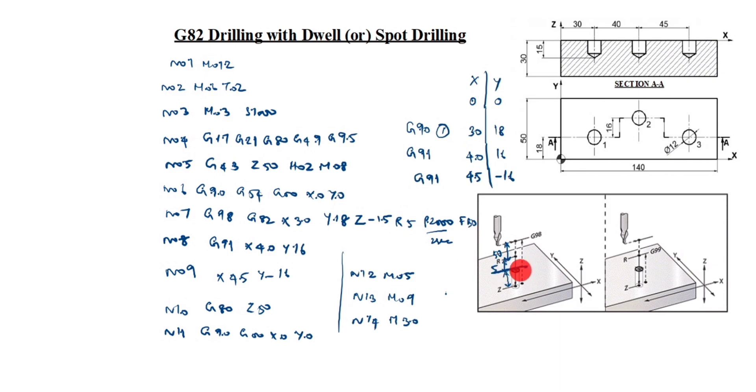Now what happened? G82 cycle instructed to drill a hole 15 mm depth at a feed of 50 mm per minute. 15 mm depth at a feed of 50 mm per minute. Now the tool is here. When it gets to depth, P2000 tells it to dwell for 2000 milliseconds or 2 seconds. So here is pass time at the bottom of the hole.